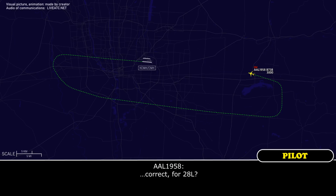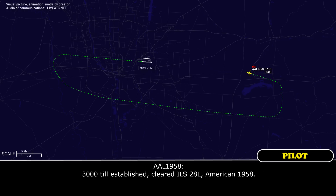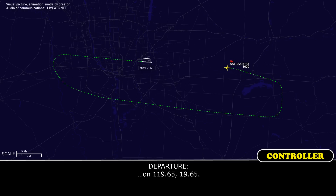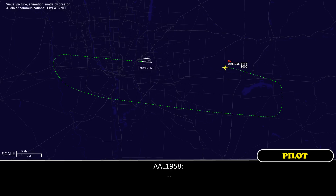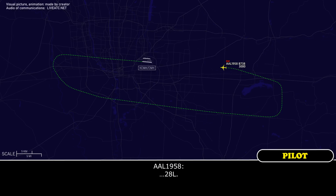Cleared for 28L. KIPAA runway is all open at this time — so you are cleared for the ILS. Maintain 3,000 until established. 3,000 until established, cleared for the ILS 28L, American 1958. Contact tower on 119.65.